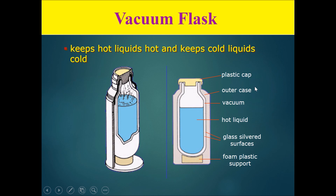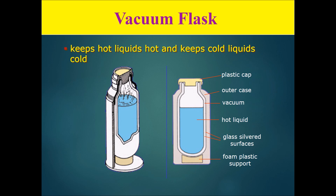The last example is called a vacuum flask. This flask is a very amazing thing because it brings all three methods of heat transfer together, or you can say that this vacuum flask works to prevent all three methods of heat transfer: conduction, convection, and radiation.